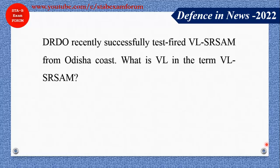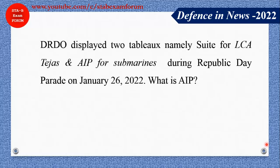DRDO recently successfully test-fired the VL-SRSAM missile from the Odisha coast. What does 'VL' stand for in VL-SRSAM? SAM stands for Surface to Air Missile, SR means Short Range, and VL means Vertical Launch — it is launched from a 90-degree angle. That is why it is called VL-SRSAM.